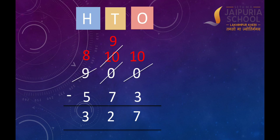Now we have got our answer: 900 minus 573 is equal to 327. My dear kids, I hope now you have understood how to do subtraction of 3-digit numbers with borrowing.